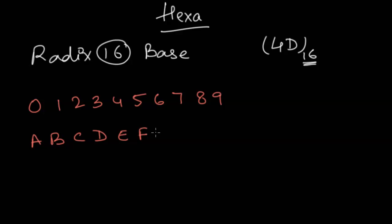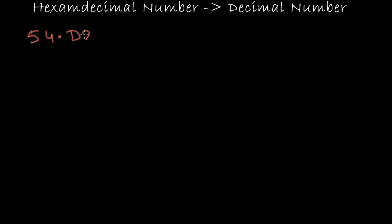So let's see how to convert a hexadecimal number into a decimal number. Let's take for an example a given number 54.D2. This is my given hexadecimal number. Now to convert this hexadecimal number into its decimal form let's take the weighted form.